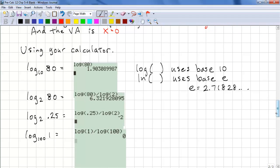Using our calculator, the calculator only uses log base 10 and log base e. e is roughly 2.71828 dot dot dot. It's an irrational number. e is used for calculus.